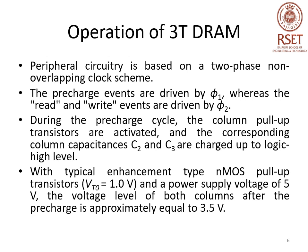The peripheral circuitry operates based on a two-phase non-overlapping clock scheme, with a pre-charge event (phase Φ1) and a read/write event (phase Φ2). Any data read or write operation is preceded by a pre-charge cycle, during which the pre-charge signal goes high. During data read or write, the pre-charge signal goes low. During the pre-charge cycle, the column pull-up transistor is activated and the column capacitances C2 and C3 are charged to logic level high.